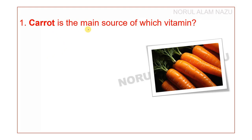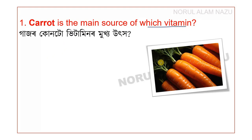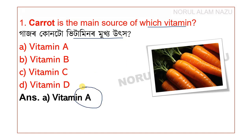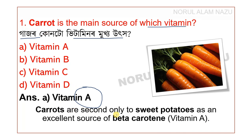The first question is: carrot is the main source of which vitamin? Options given are Vitamin A, B, C, D. The answer is option A — Vitamin A. Carrots are second only to sweet potatoes as an excellent source of beta-carotene, which is Vitamin A.